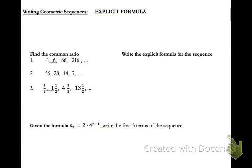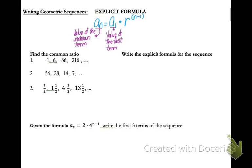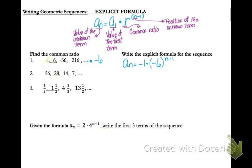Now let's look at geometric sequences. The explicit formula for geometric sequences is: a sub n equals a sub 1 times r raised to the n minus 1. It's very important that you realize r is raised to a power. a sub n is my unknown term, a sub 1 is the value of the first term, r is my common ratio — either multiplying by a whole number or a fraction — and n is the position of my unknown term. For the first sequence, I'm multiplying each time by negative 6, and my first term is negative 1, so: a sub n equals negative 1 times negative 6 raised to the n minus 1.